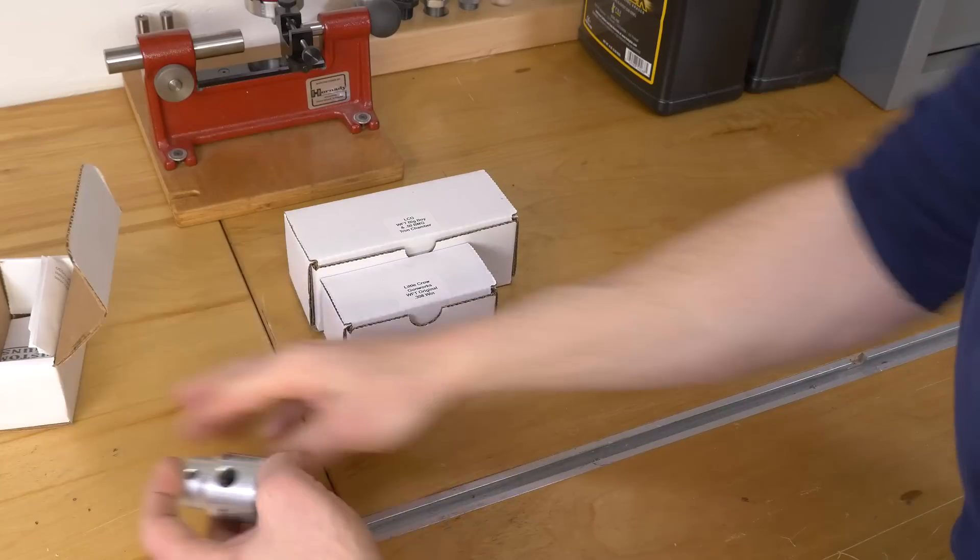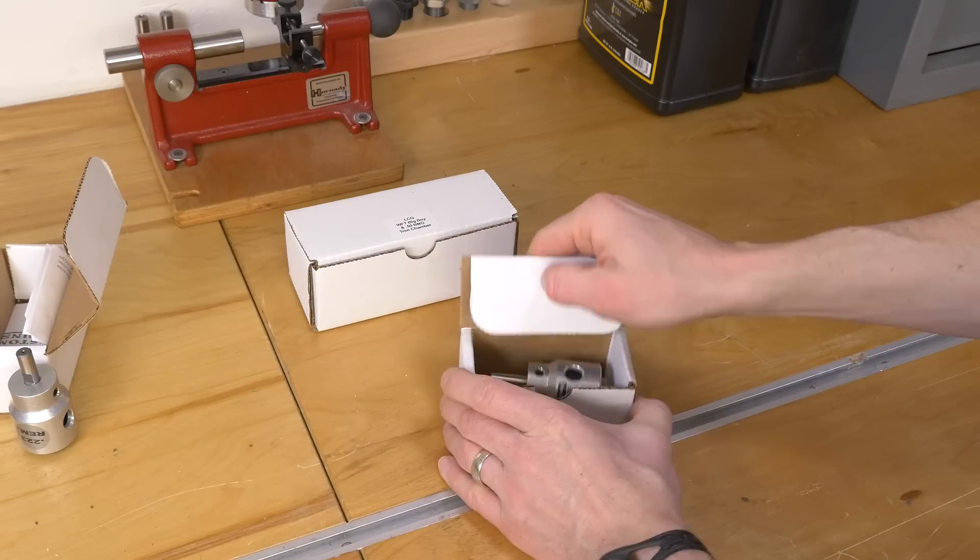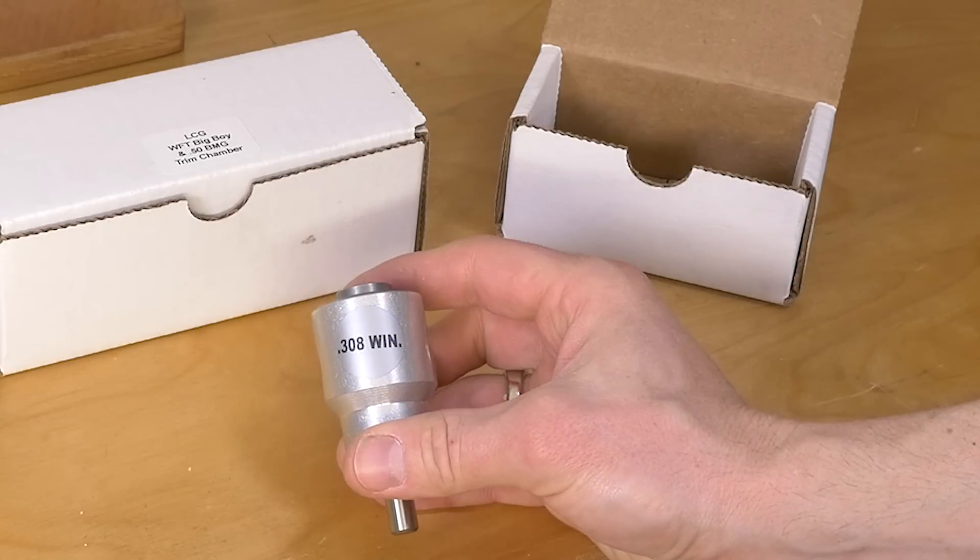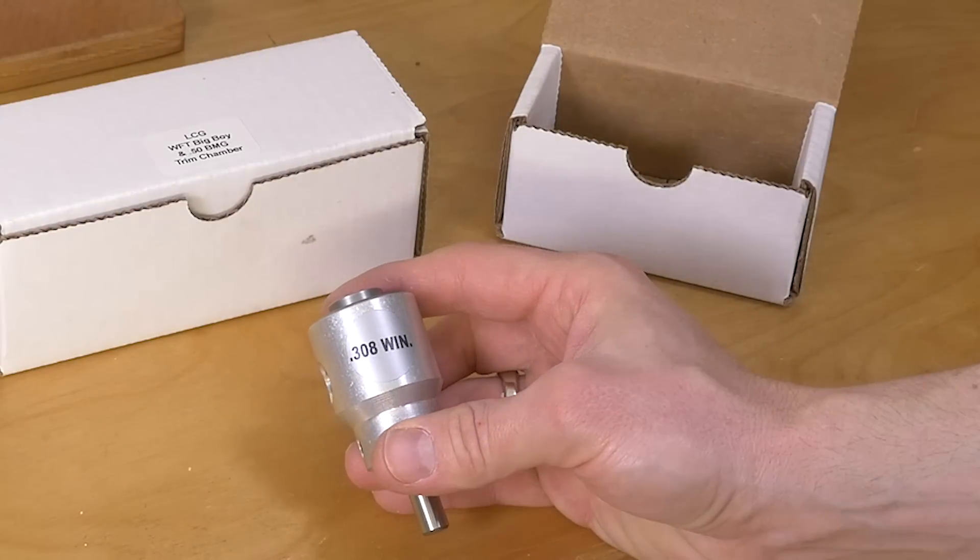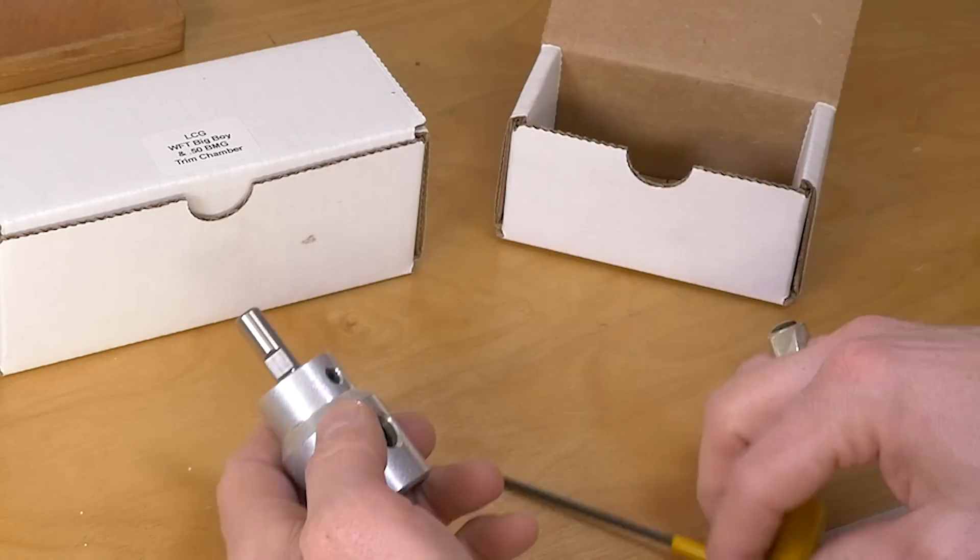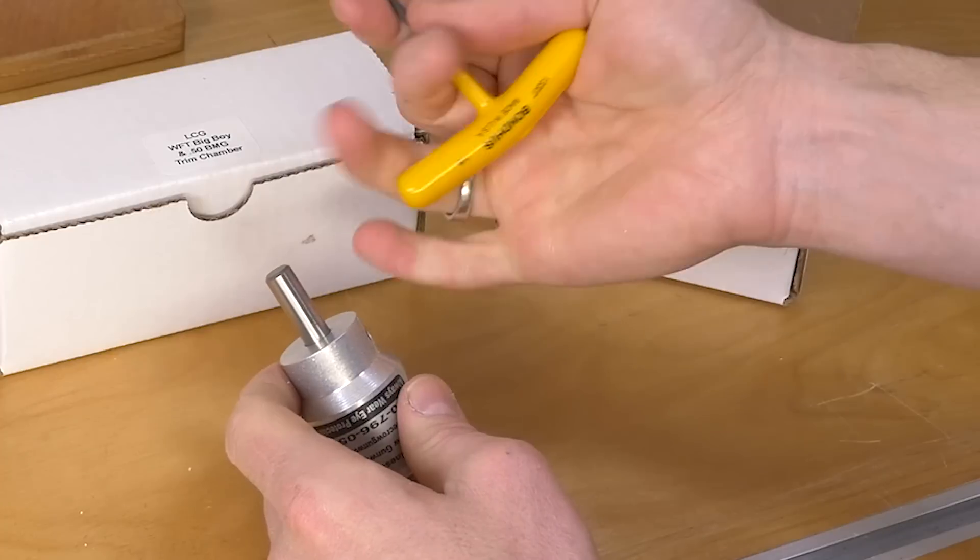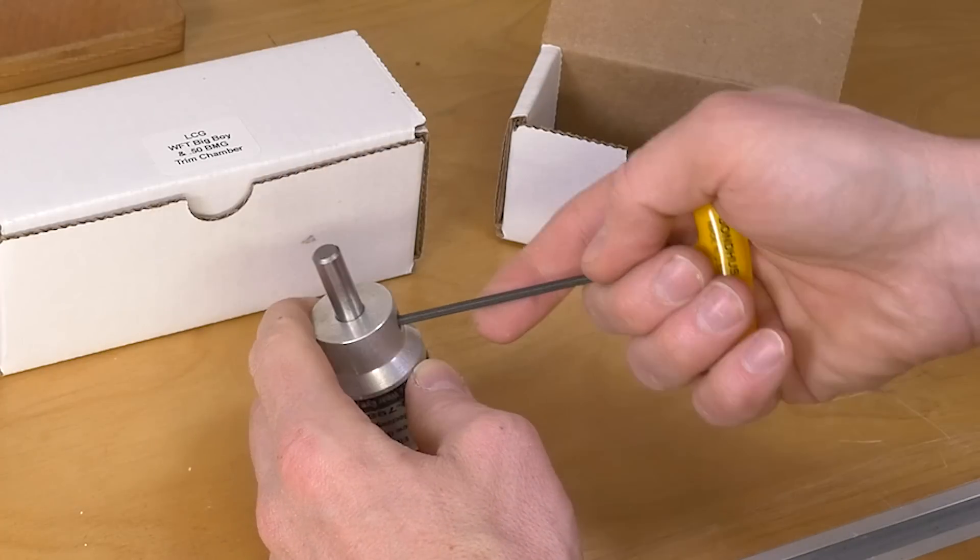So I haven't yet used or set up the 223 one but I have been playing with my 308 World's Finest Trimmer. And what I want to do is kind of give you just a quick tour of the internals here. There's a couple set screws. This is an eighth inch allen key I've got here.